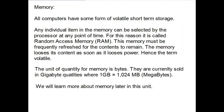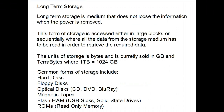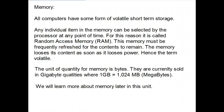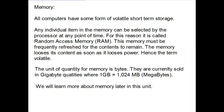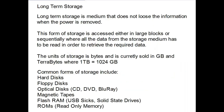All computers have some form of volatile short-term storage. Any individual item in memory can be selected by the processor at any point in time — for this reason it is called random access memory. This memory must be frequently refreshed for the contents to remain, and loses content as soon as it loses power, hence the term 'volatile'. The unit of memory is bytes; RAM is currently sold in gigabyte quantities, where one gigabyte equals 1024 megabytes.